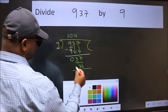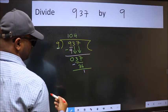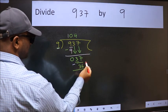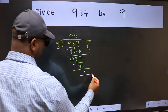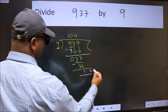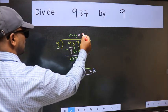Now we should subtract. We get 1. No more numbers to bring it down, so we stop here. This is our remainder and this is our quotient.